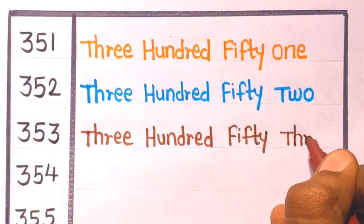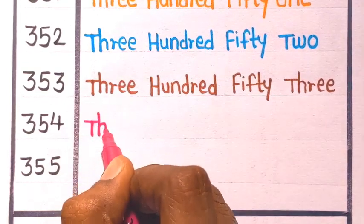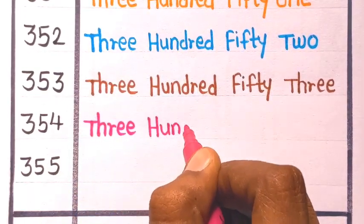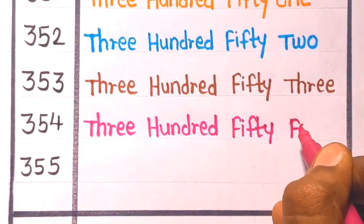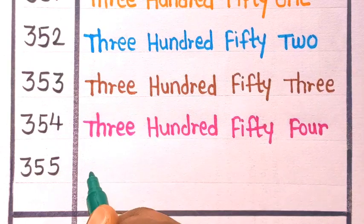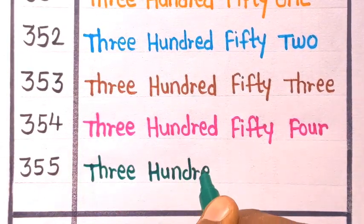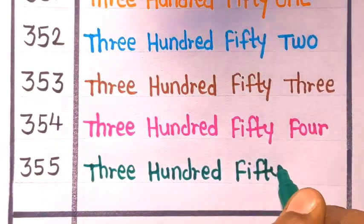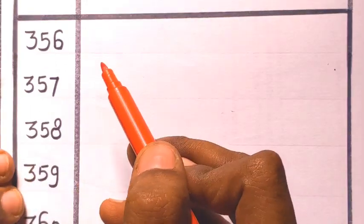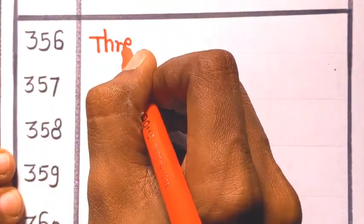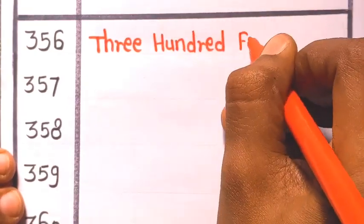Next number, three fifty-three is three hundred fifty-three. Three fifty-four is three hundred fifty-four. Three fifty-five is three hundred fifty-five. Next is three fifty-six is three hundred fifty-six.